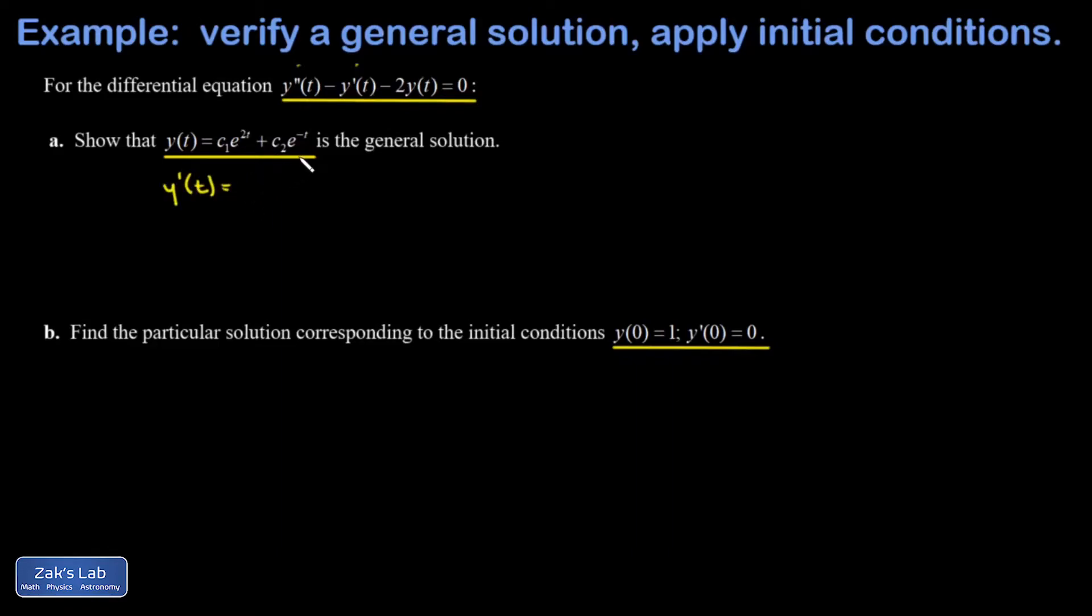And the chain rule produces a factor of 2 in that first term and a factor of negative 1 in the second term. Then I get y double prime, again I produce a factor of 2 in the first term and a factor of negative 1 in the second term.